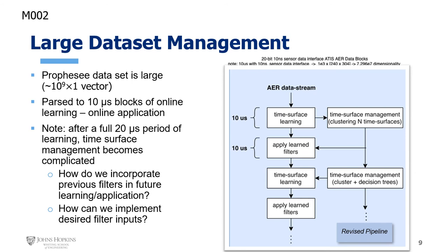Even with lifelong learning and the change of distance metric from L2 to determinants, we still come to a bottleneck when it comes to event-based processing management. We have a lot of data coming our way because of the 20-bit, 10-nanosecond sensor data interface that the ATIS provides. Our approach is to chop up the learning and application into time blocks where one or the other is accomplished. We picked 10 microsecond blocks because it matched our interface. This online/offline learning application scheme seemed to work out, and we were looking to optimize for the lowest resource compatibility across chips, especially for out-in-the-field applications.